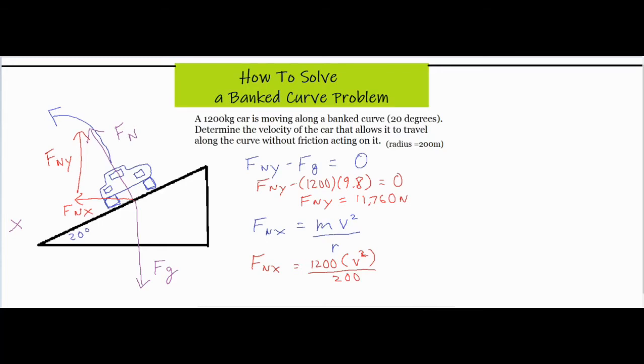I plugged in all of my values and it looks like I was able to find my F_n y because we know that F_g is mg and we know our mass is 1200 and g is 9.8. If we add this to both sides we know that our F_n y is 11,760 newtons. Down here we don't know the F_n x, we do know the mass and the radius from the information given in the original problem.